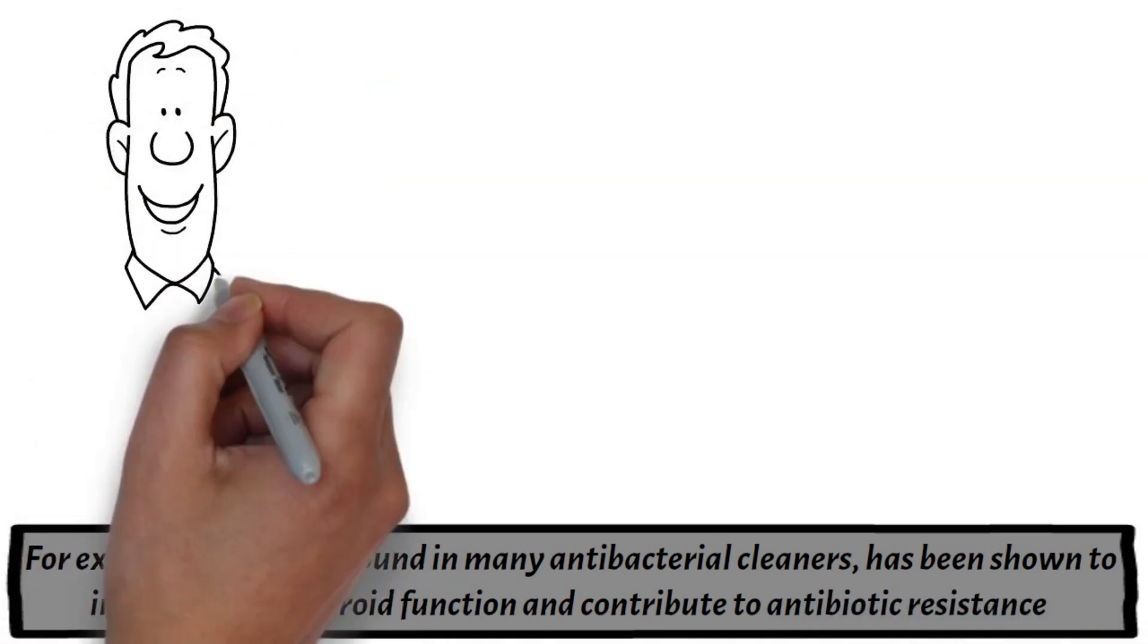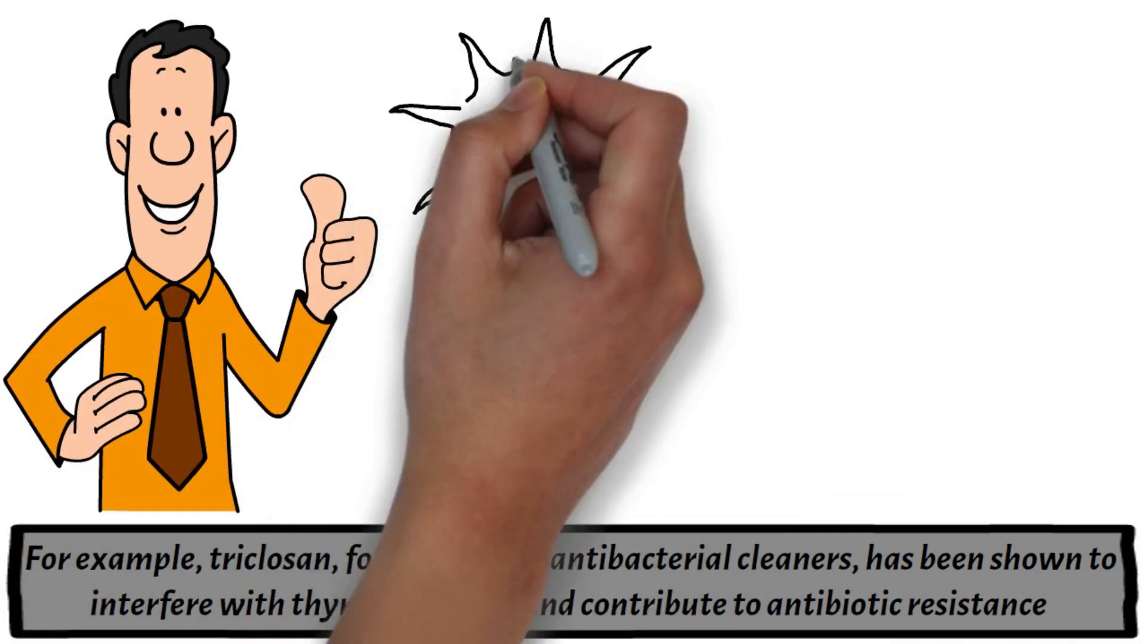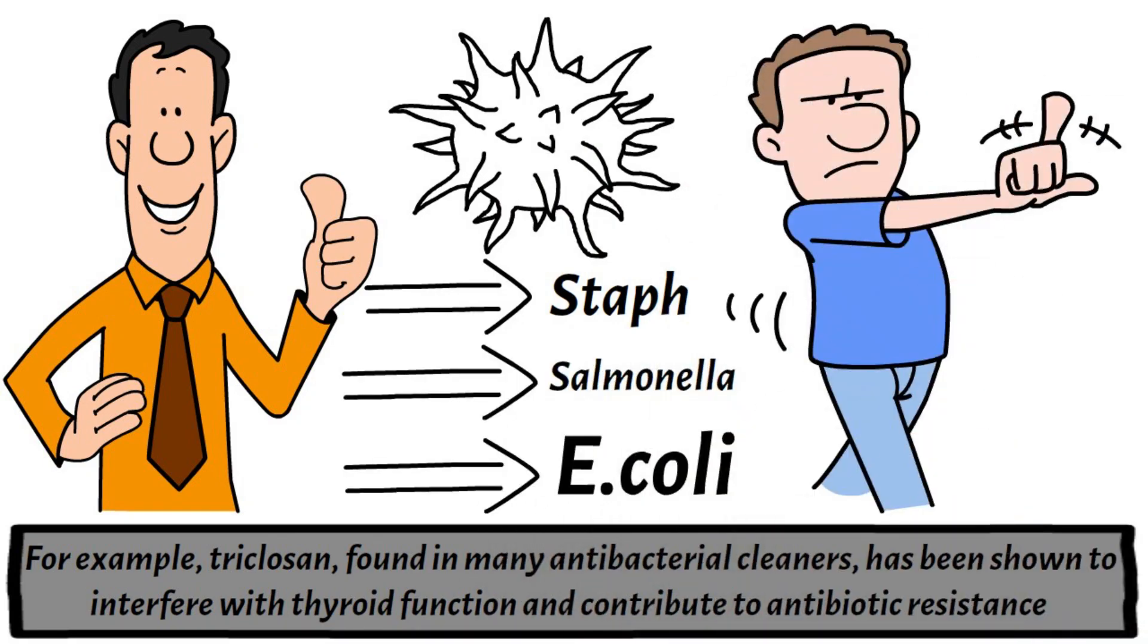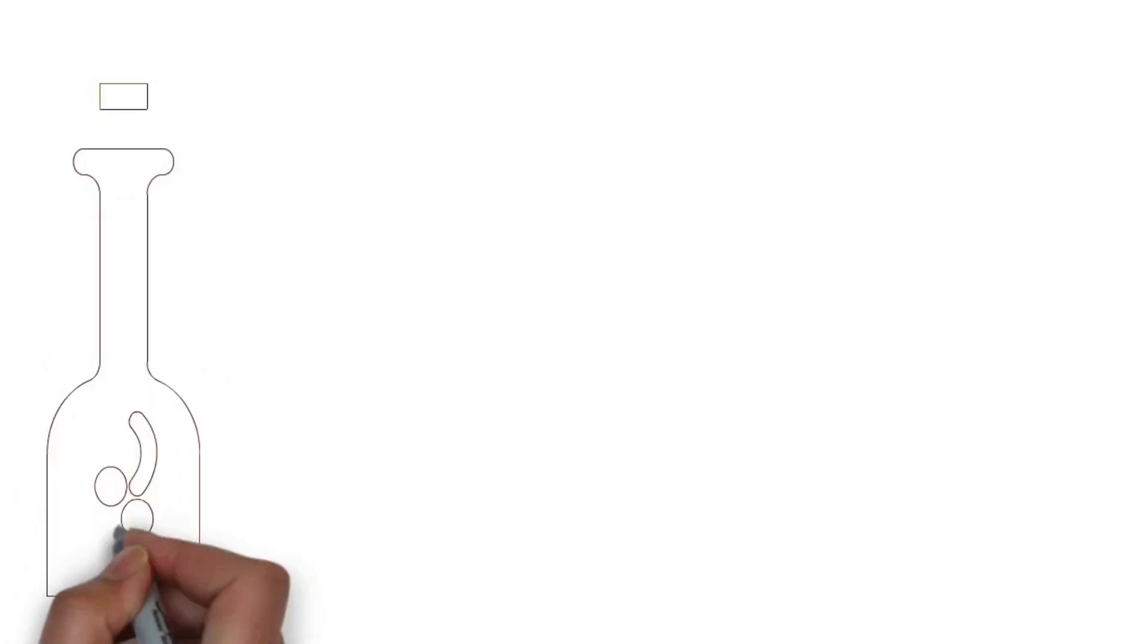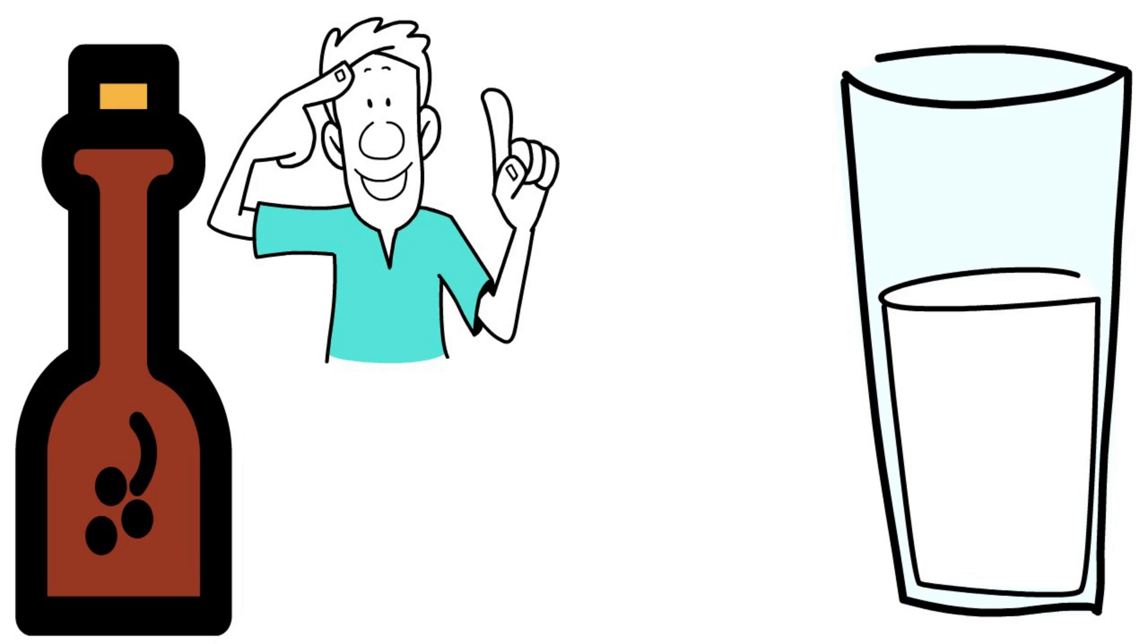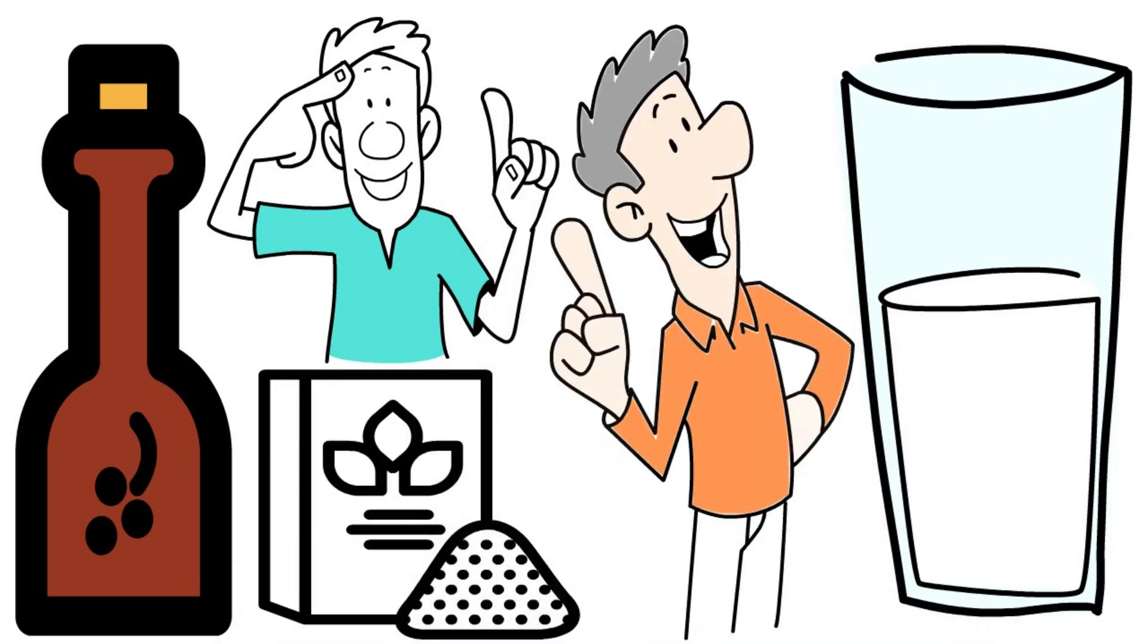Vinegar and baking soda are fantastic natural alternatives. They're effective against bacteria like staph, salmonella, and E. coli without the harmful side effects. A simple mixture of vinegar and water can be used to clean most surfaces, while baking soda can be used as a scrubbing agent for tougher stains.